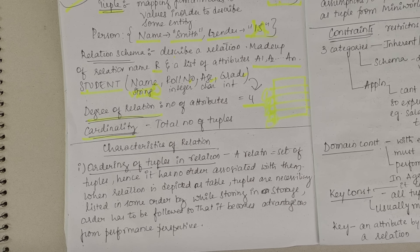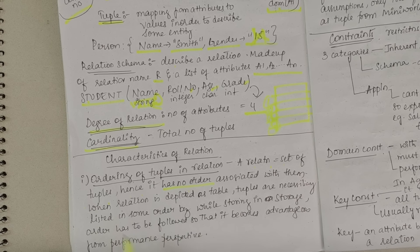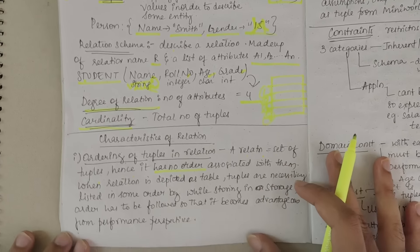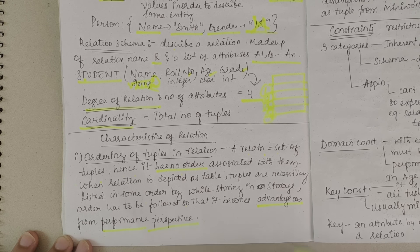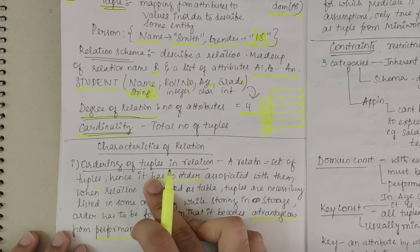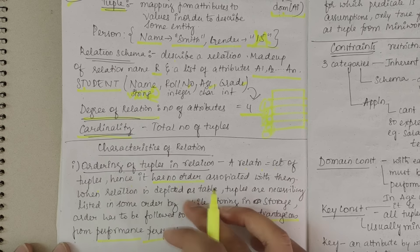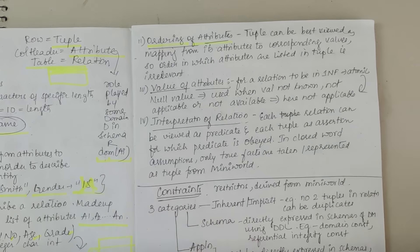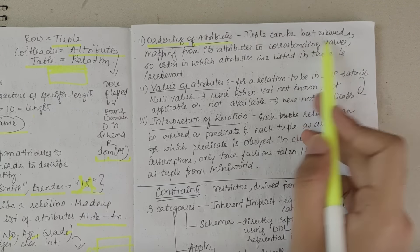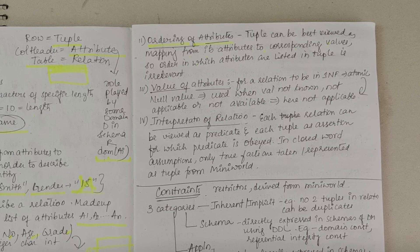Next we have characteristics of a relation. There are four main characteristics. The first one is ordering of tuples in a relation. A relation is equal to a set of tuples, so it has no order associated with them. However, when a relation is depicted as a table, tuples are necessarily listed in some order — ordering is important for storage and retrieval performance.